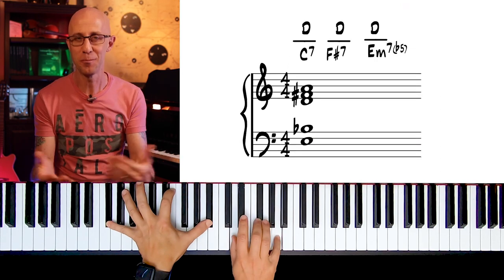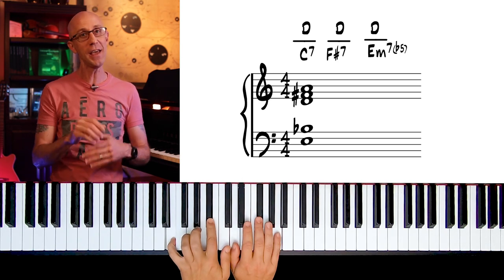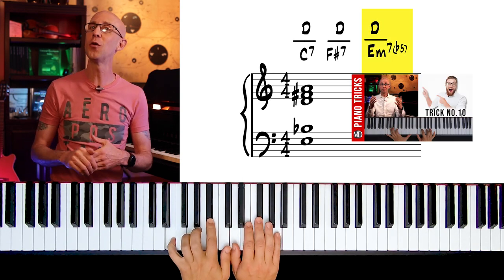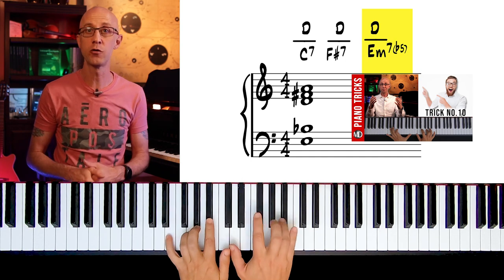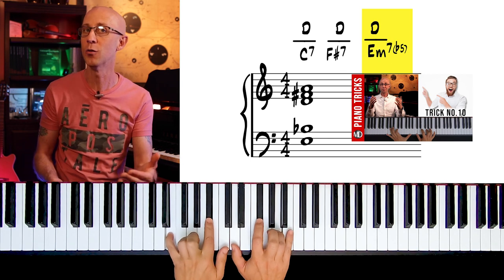Even more interesting is that when we voice this chord as E, B flat, D, F sharp, and A, we're suggesting another one of the tricks in this book: trick number 10, which is the major triad on the flat seven of a minor seven flat five chord.